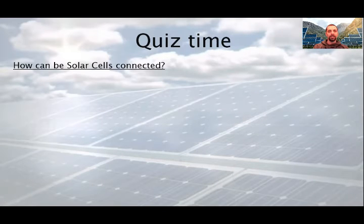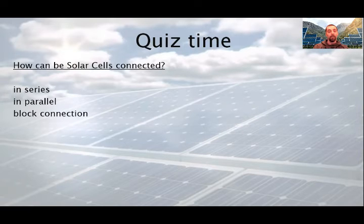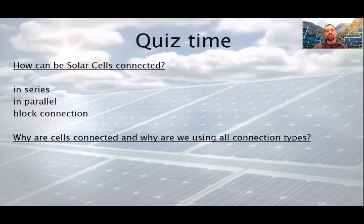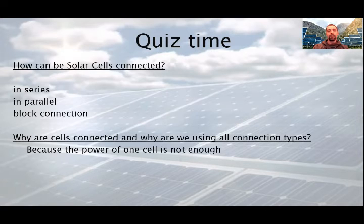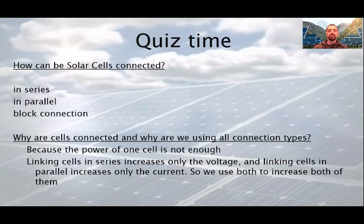How can solar cells be connected? In series, in parallel, block connection. And the last question, why are cells connected and why are we using our connection types? Because the power of one cell is not enough and linking cells in series increases only the voltage and linking cells in parallel increases only the current. So we use both to increase both of them.